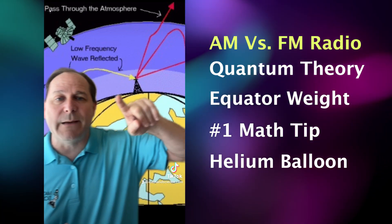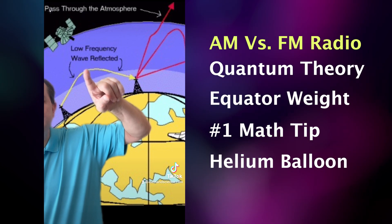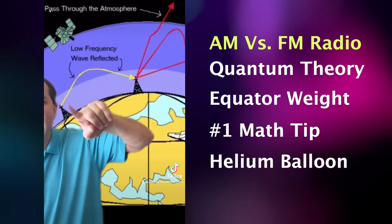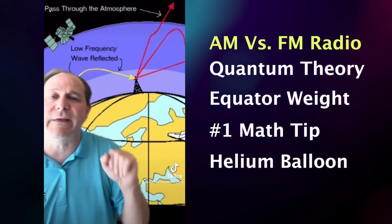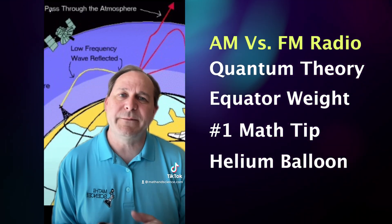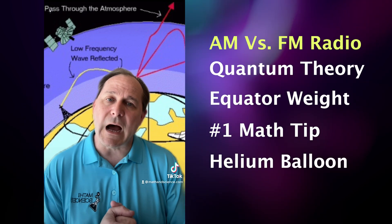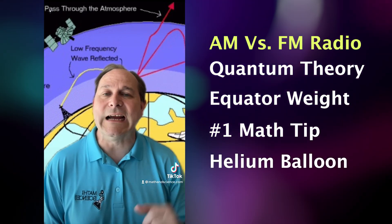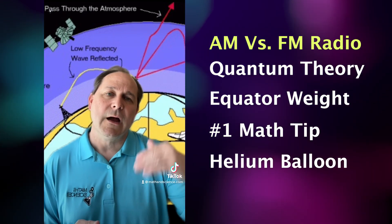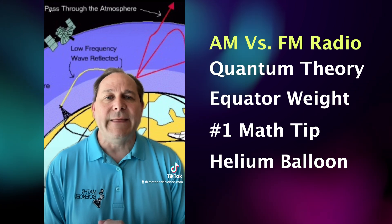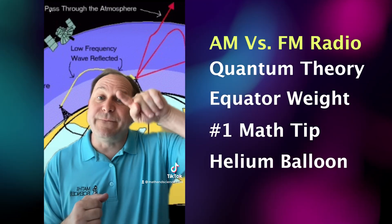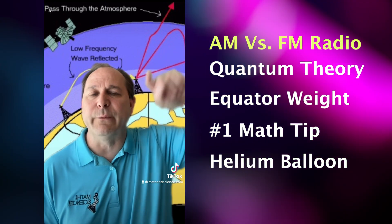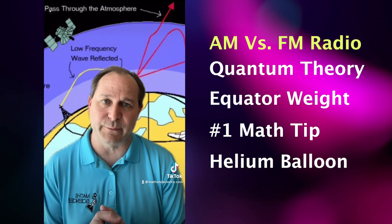At nighttime, AM can very effectively bounce off the ionosphere. The AM frequencies are low enough to be able to do that, so they can go up to maybe a thousand miles. Basically, there's a plasma layer called the ionosphere above the atmosphere, and that plasma reflects the low frequencies better than the high frequencies, which pass through.